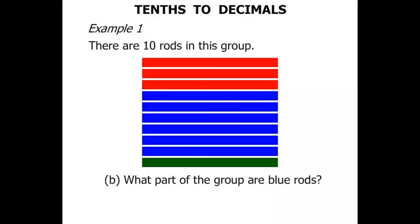What part of the group are blue rods? Let's count them. 1, 2, 3, 4, 5, 6. So there's 6 out of 10. As a fraction we write 6 tenths. And as a decimal 0.6.